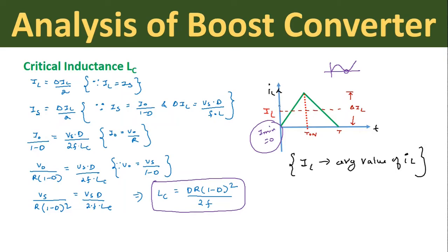From the inductor current waveform at the critical condition, the average inductor current IL = ΔiL / 2. Since inductor current equals source current, Is = ΔiL / 2. Substituting Is = i0/(1−D) and ΔiL = Vs·D/(f·L), then writing i0 = V0/R and V0 = Vs/(1−D), all terms simplify and the final equation for critical inductance is: Lc = D · R · (1−D)² / (2f).